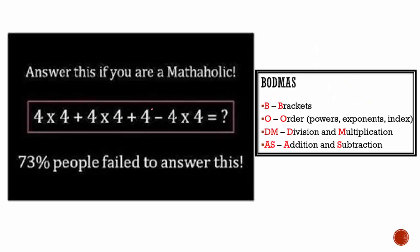Third one. No brackets, no orders. So we just do division and multiplication first and then addition and subtraction after. 4 multiplied by 4 is 16, plus 4 multiplied by 4 is 16, plus 4, minus 4 multiplied by 4 is 16. Now we have addition and subtraction left, going left to right: 16 plus 16 is 32, 32 plus 4 is 36, 36 minus 16 is equal to 20.